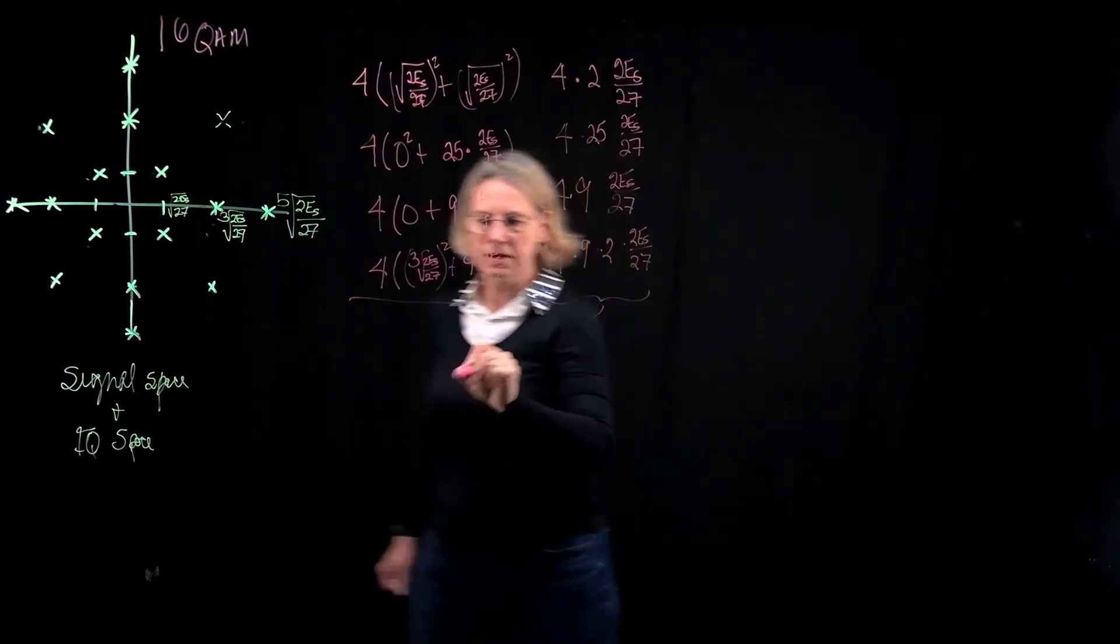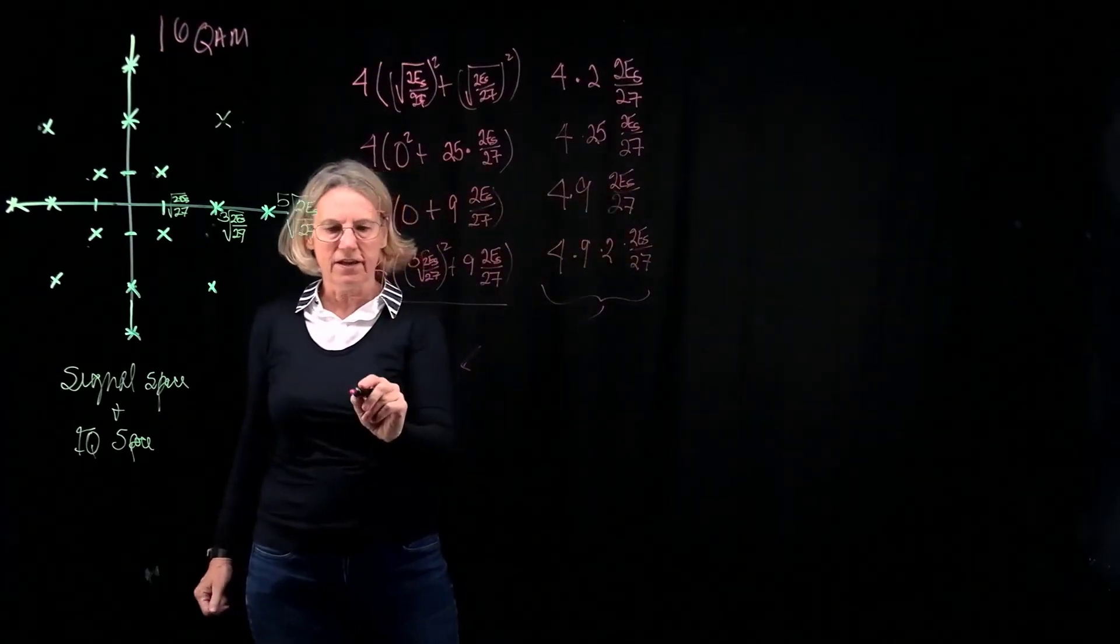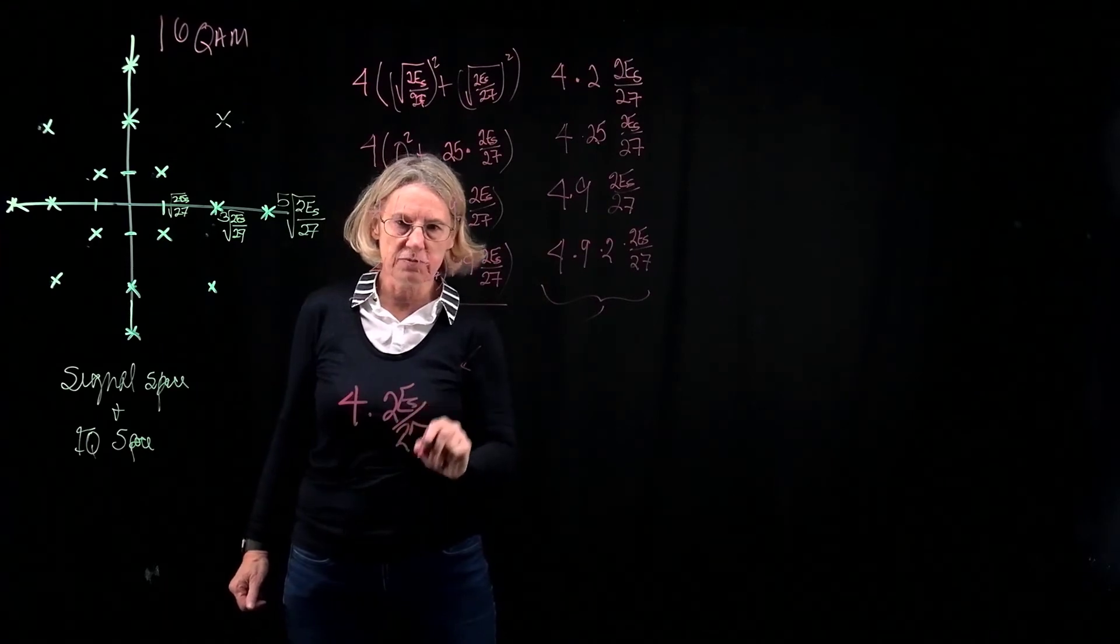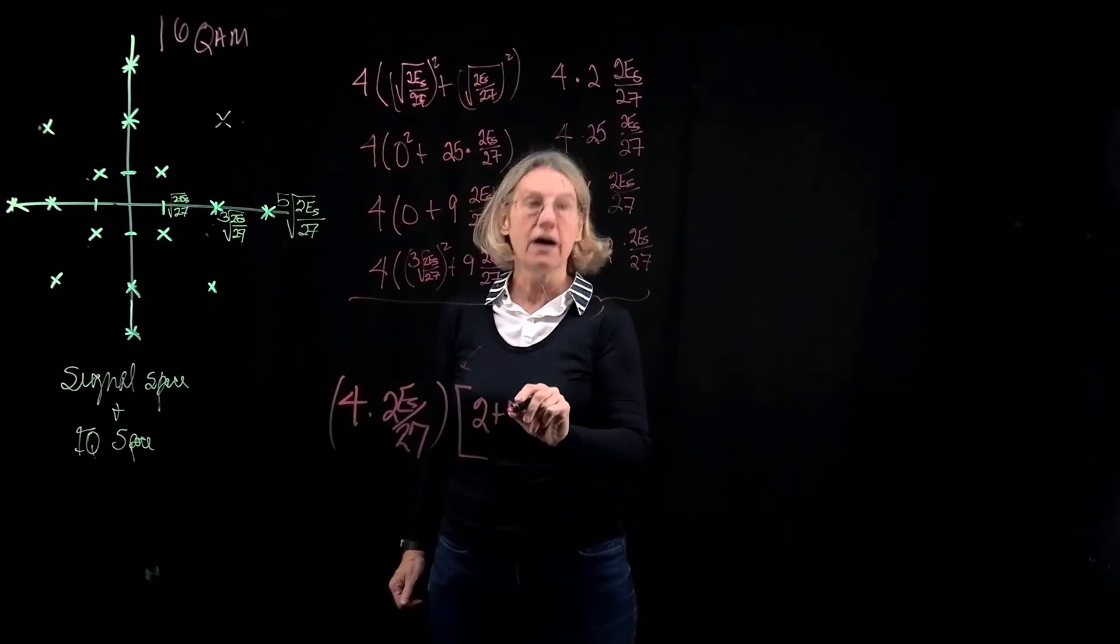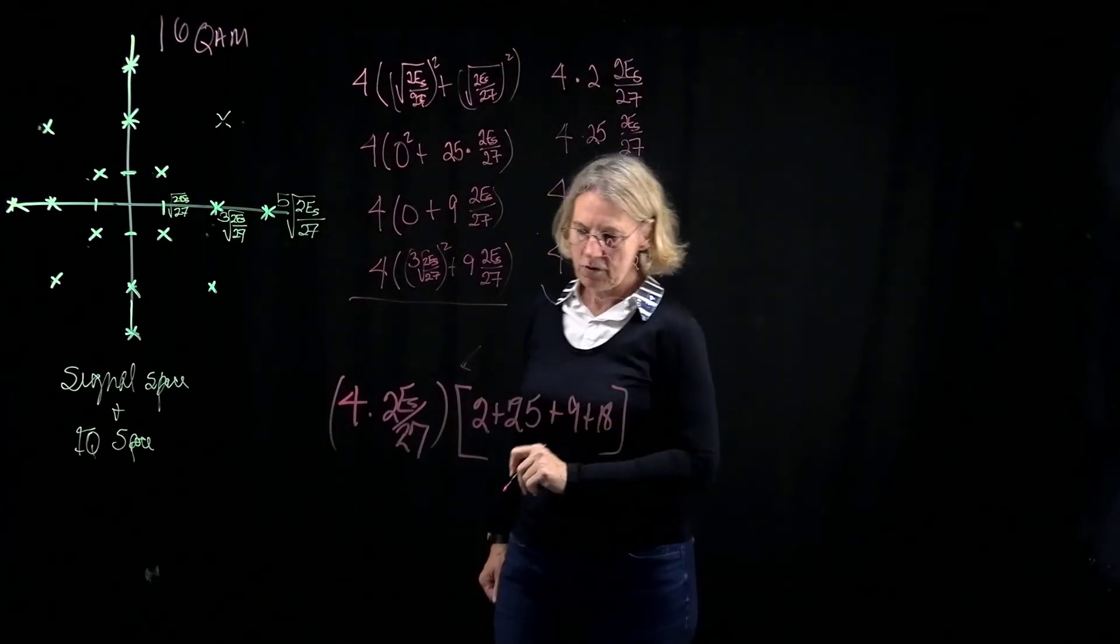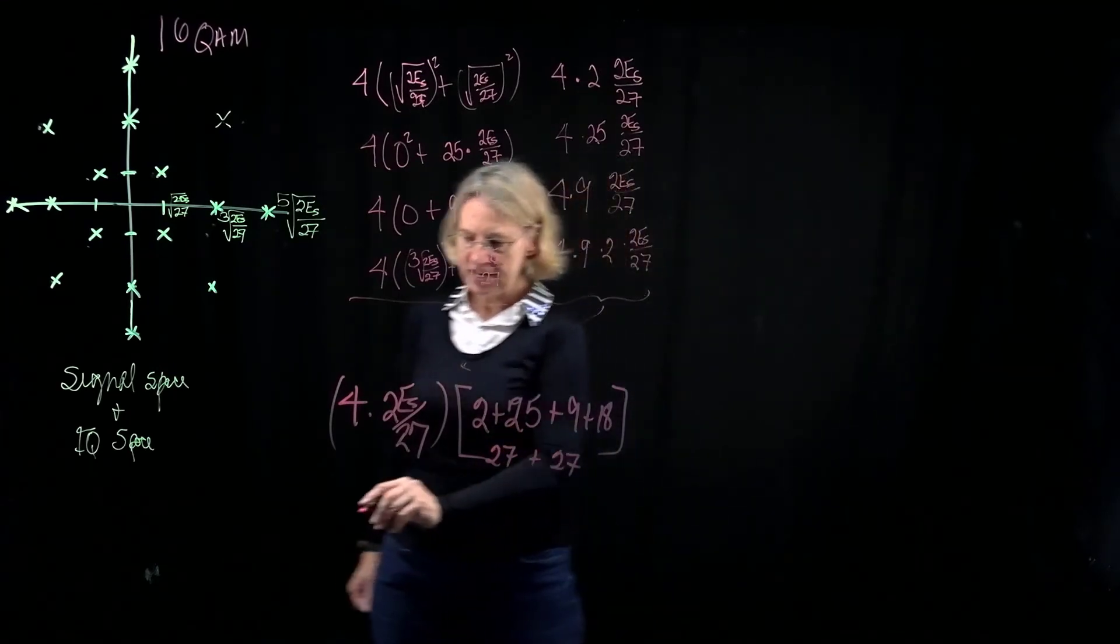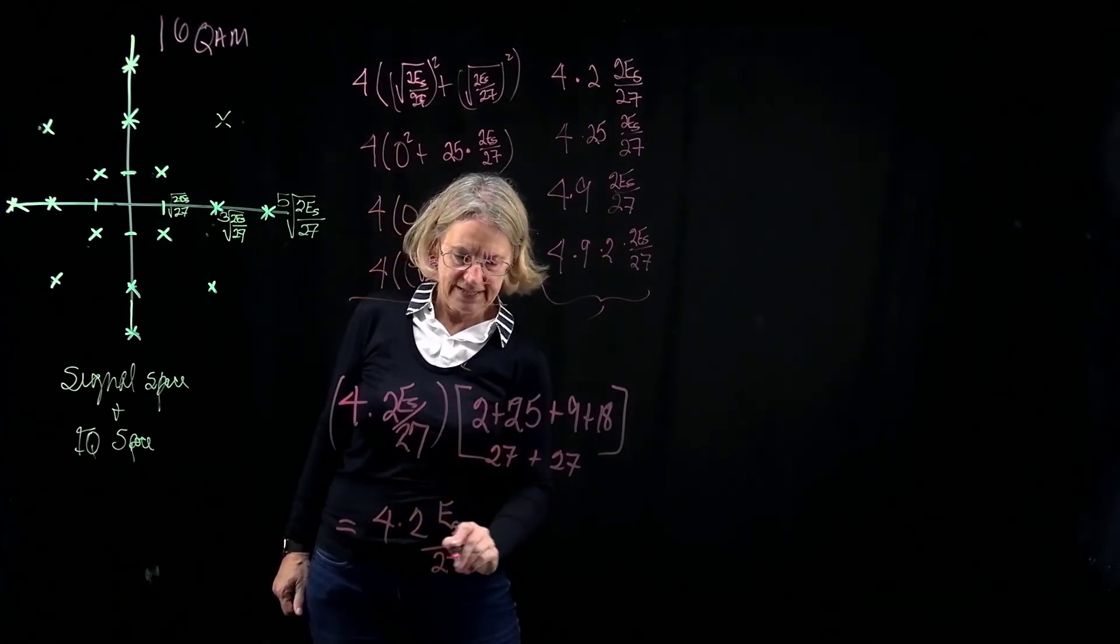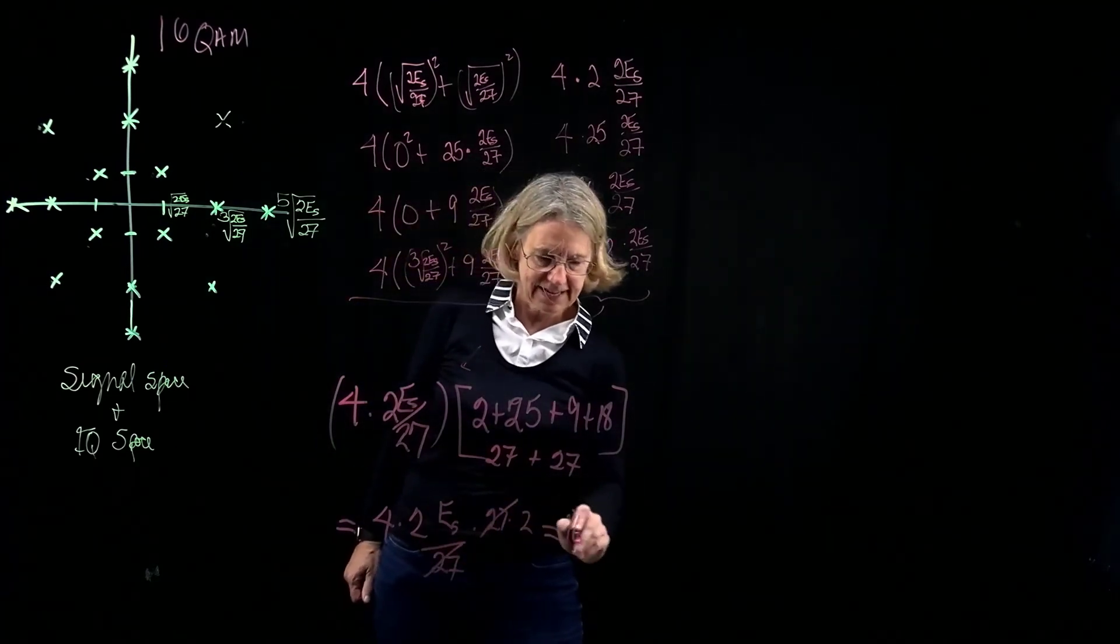So now let's combine these terms. And what we're going to see is that we get, well, let's take the 4 times 2ES over 27 that are in all of the terms. We'll factor that out. And what do we multiply it by? We multiply it by 2 plus 25 plus 9 plus 18. And of course, that gives me 27 plus 27. So that just equals 4 times 2ES over 27 times 27 times 2. The 27s cancel out, and I get 16ES.